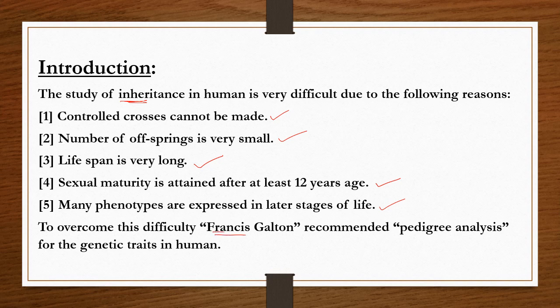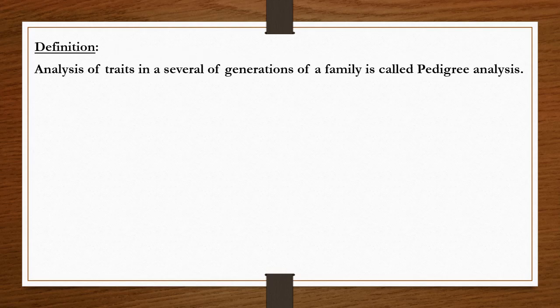To overcome these difficulties, scientist Francis Galton recommended pedigree analysis for studying genetic traits — that means characters — in human beings. Pedigree analysis is defined as the analysis of traits in several generations of a family. This analysis of characters across several generations of a family is called pedigree analysis.